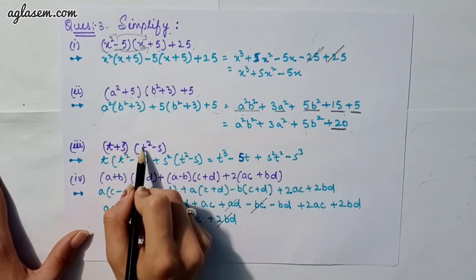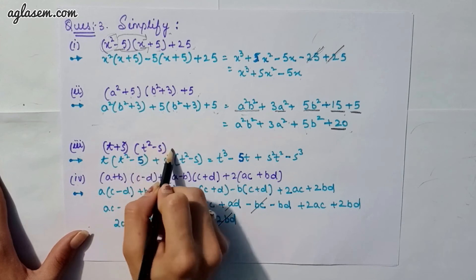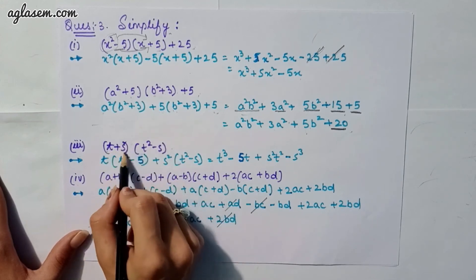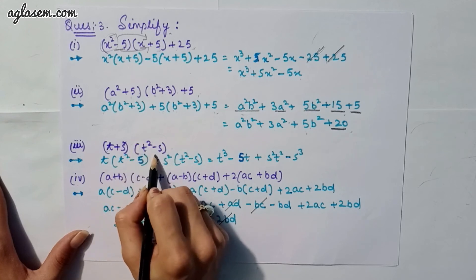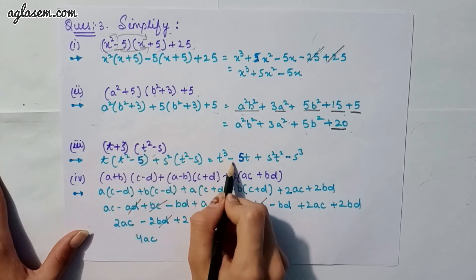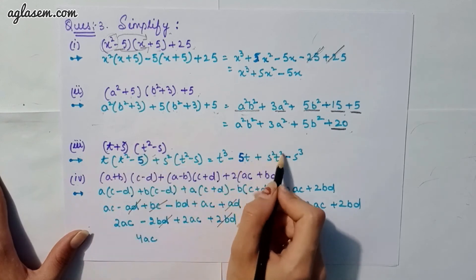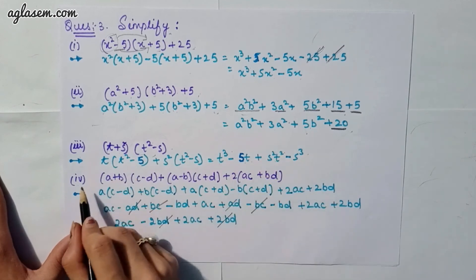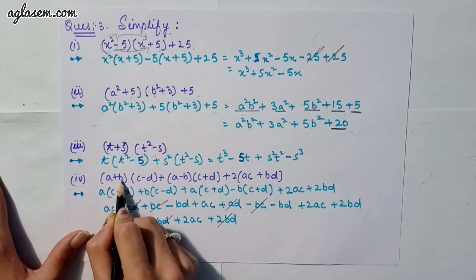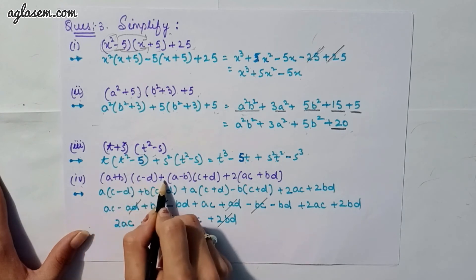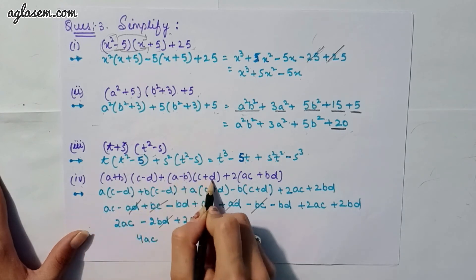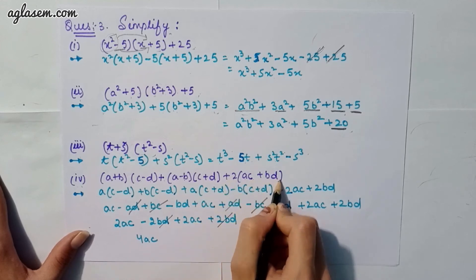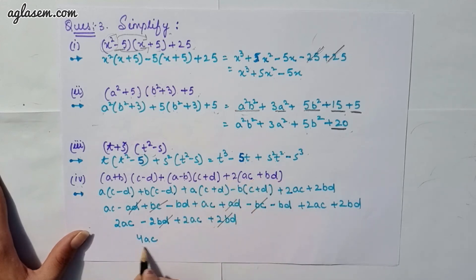The third part says (t + s)(t² − s). t will be multiplied by this whole bracket and s will be multiplied by this whole bracket. Our answer will be t³ − st + s²t² − s³. The fourth part says (a + b)(c − d) + (a − b)(c + d) + 2(ac + bd), which simplifies to 4ac.